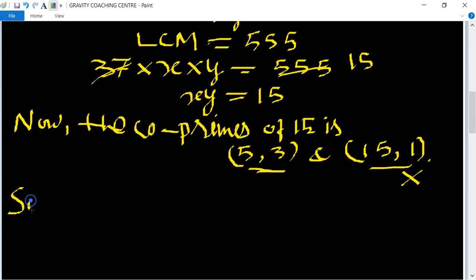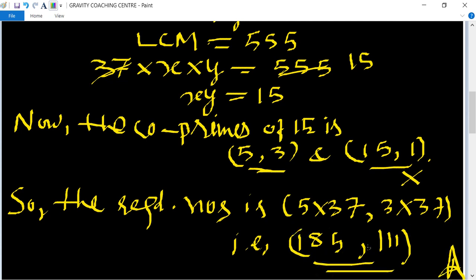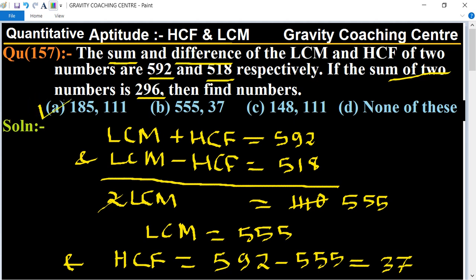So the required numbers are 5 times 37, comma 3 times 37. So that is 185, comma 111. Answer. So option A is the right answer.